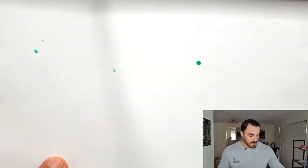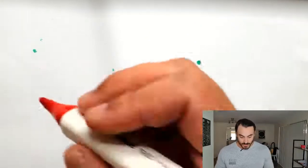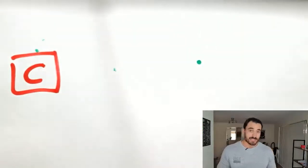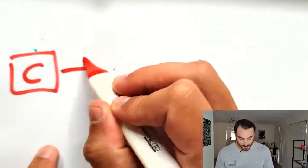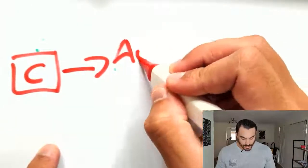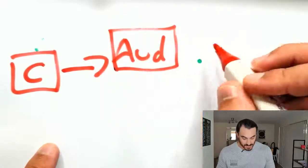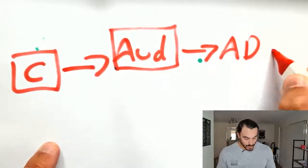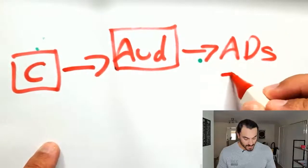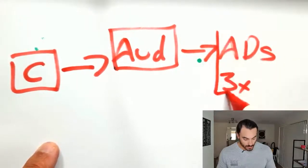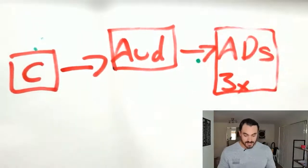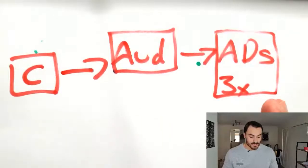Now, the correct way to do it would be to select your campaign, choose your audience that makes the most sense, and then create your ads. I'm a big fan of creating at least three ads for a test. You can go to my Facebook group, 'I Want to Learn FB Ads', and that's going to show you how I set up this particular structure.